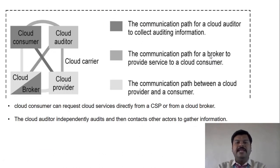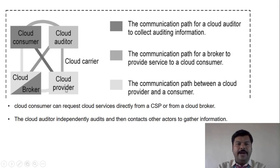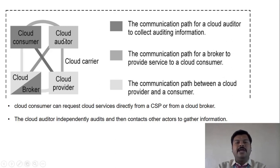This diagram illustrates the communication path between each actor: cloud consumer, cloud broker, cloud auditor, cloud provider, and cloud carrier. The cloud consumer can directly consume services from the cloud provider, or can access the cloud provider's services through the cloud broker. The cloud auditor audits the facilities of both cloud consumers and cloud providers, including security testing. The cloud carrier transports resources from one place to another.